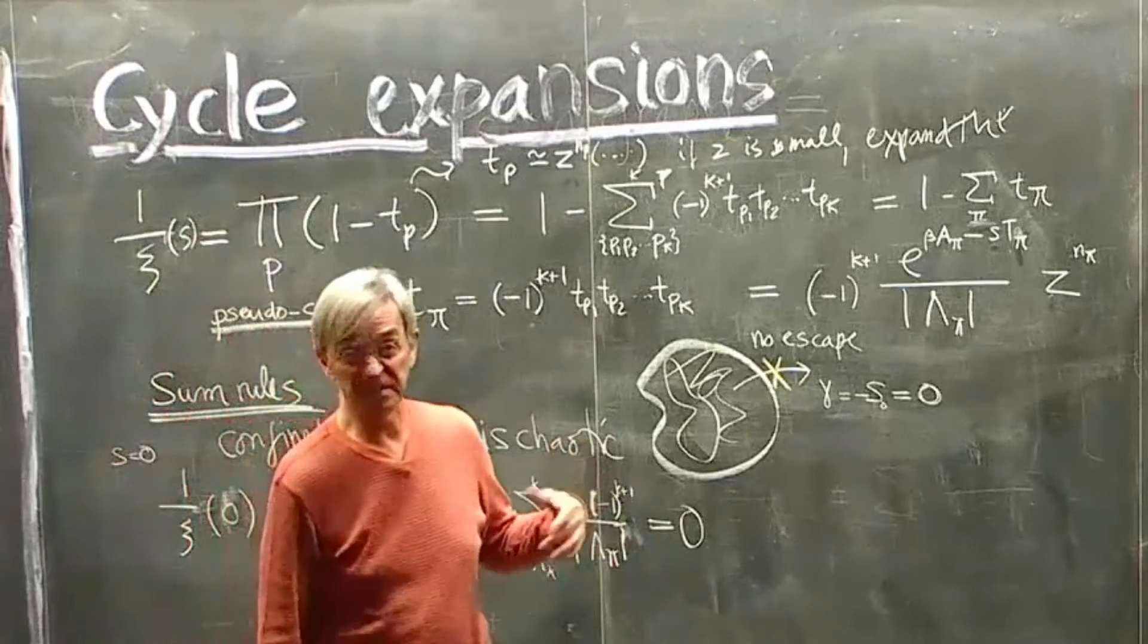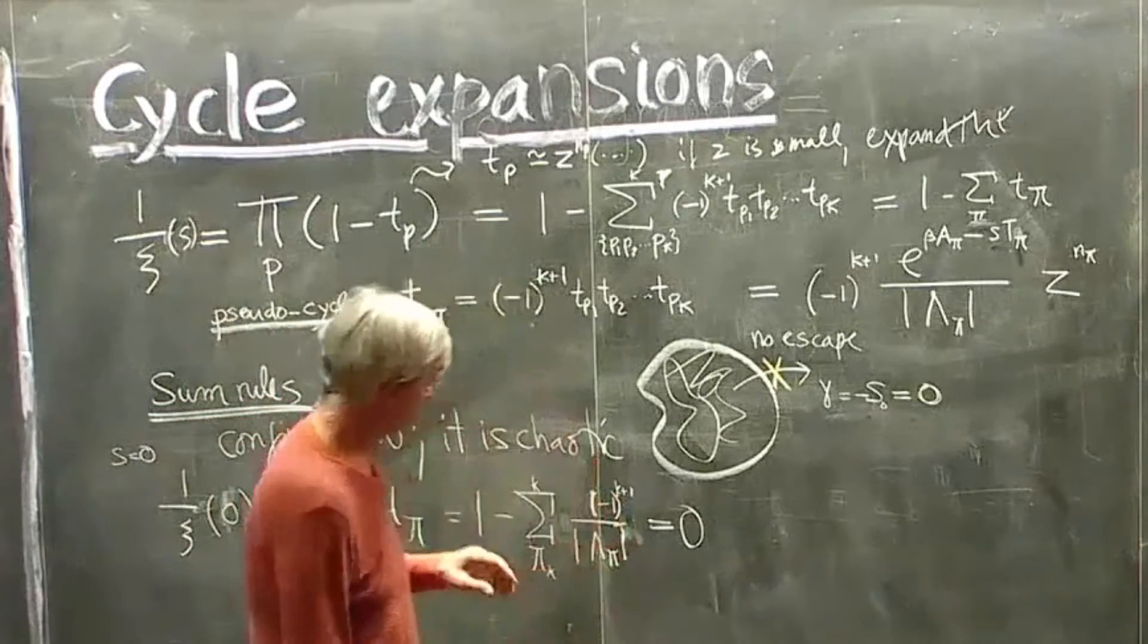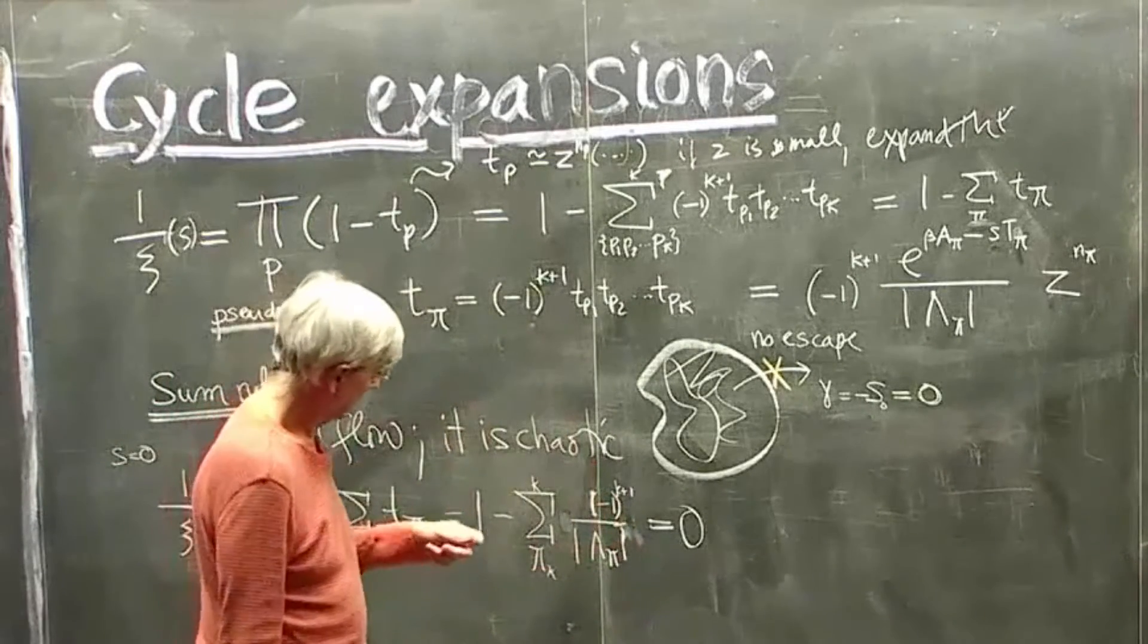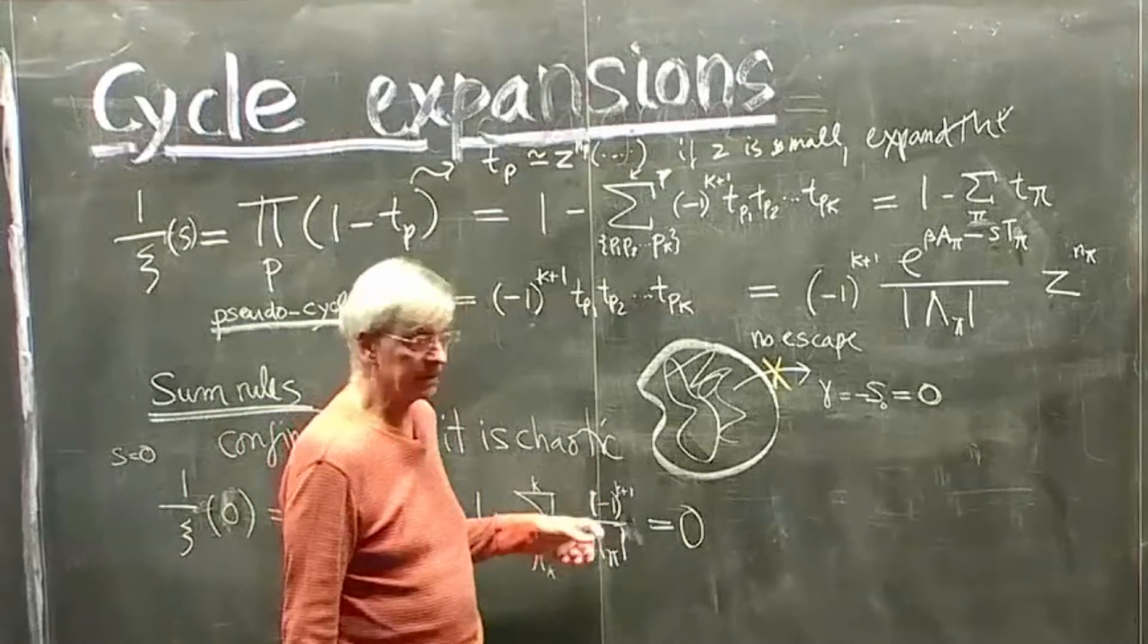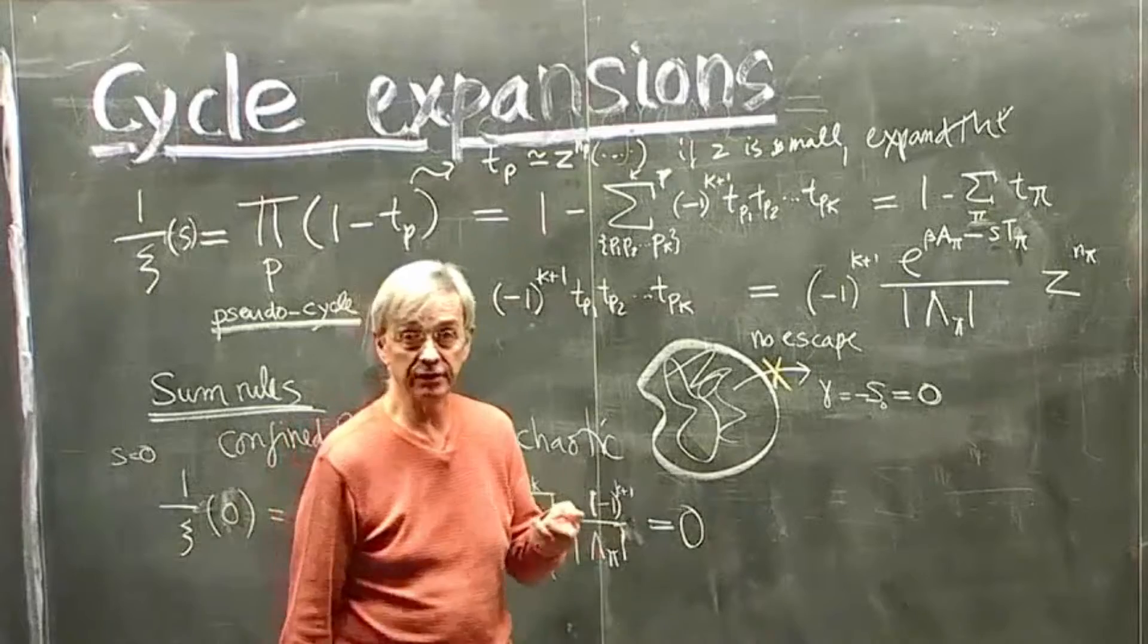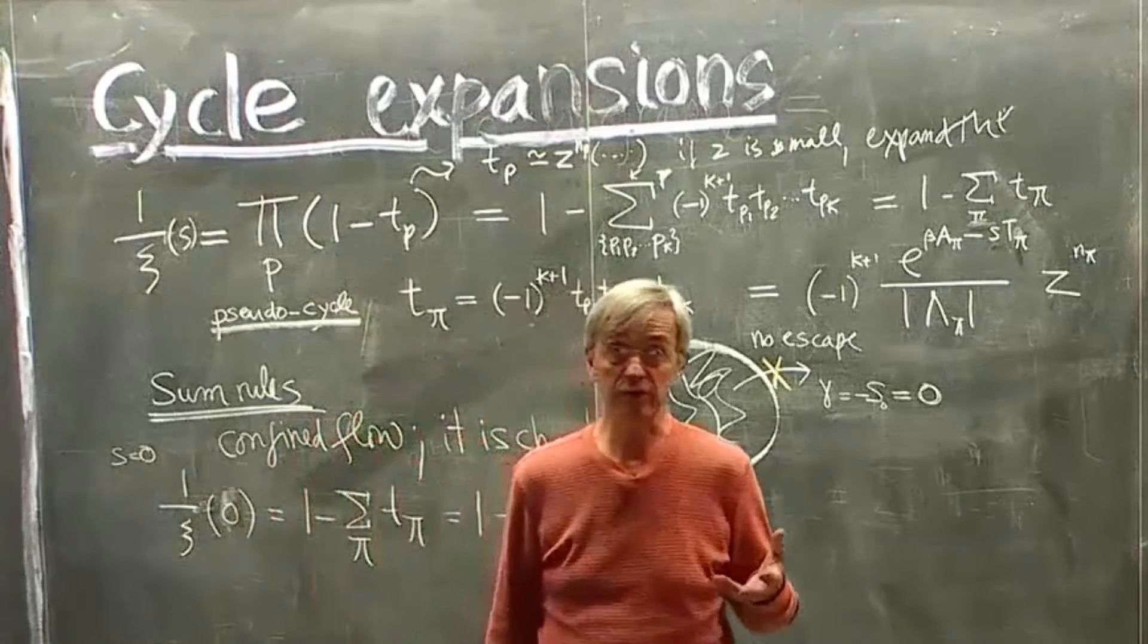Whenever you compute your periodic orbits and their stabilities, and you have a confined system, you must check how good the sum rule is. If the sum rule is very bad, it probably means you've lost, you haven't found one of the short periodic orbits.